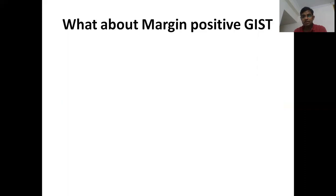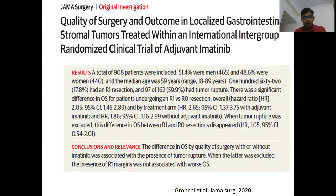Recently, a colleague called regarding a patient with stomach GIST where margins were positive post-surgery, but PET-CT was normal. It was an 8 cm high mitotic count tumour — should we repeat surgery? A key paper by Gronchi et al. published last year suggests that the most important factor post-surgery is tumour rupture. R1 resection is perhaps not the poorest prognostic event and may not significantly affect prognosis. Margin positivity in GIST is acceptable unless residual disease is present.